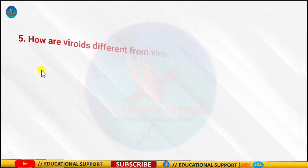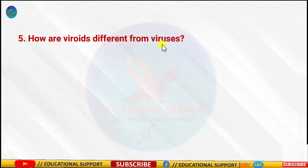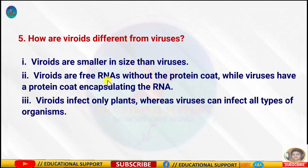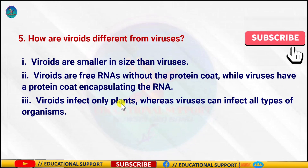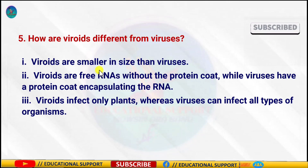Question number five: How are viroids different from viruses? This is a very important question for your exams. Viroids are very small infectious agents with single-stranded RNA without a protein coat. Viruses, on the other hand, have single-stranded or double-stranded DNA or RNA bound with a protein coat. Viroids are smaller in size compared to viruses, and viroids infect only plants, while viruses can infect plants, animals, and microorganisms.